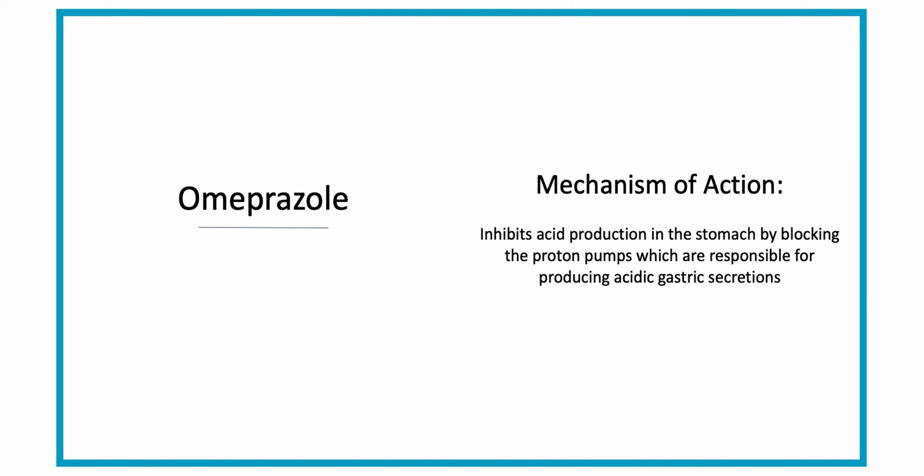The mechanism of action of Omeprazole is that it inhibits acid production in the stomach by blocking the proton pumps, which are within the parietal cells — those are in the stomach lining. These are responsible for producing the acidic gastric secretions. So by blocking the production of this, it is limiting the amount of acid that is produced.